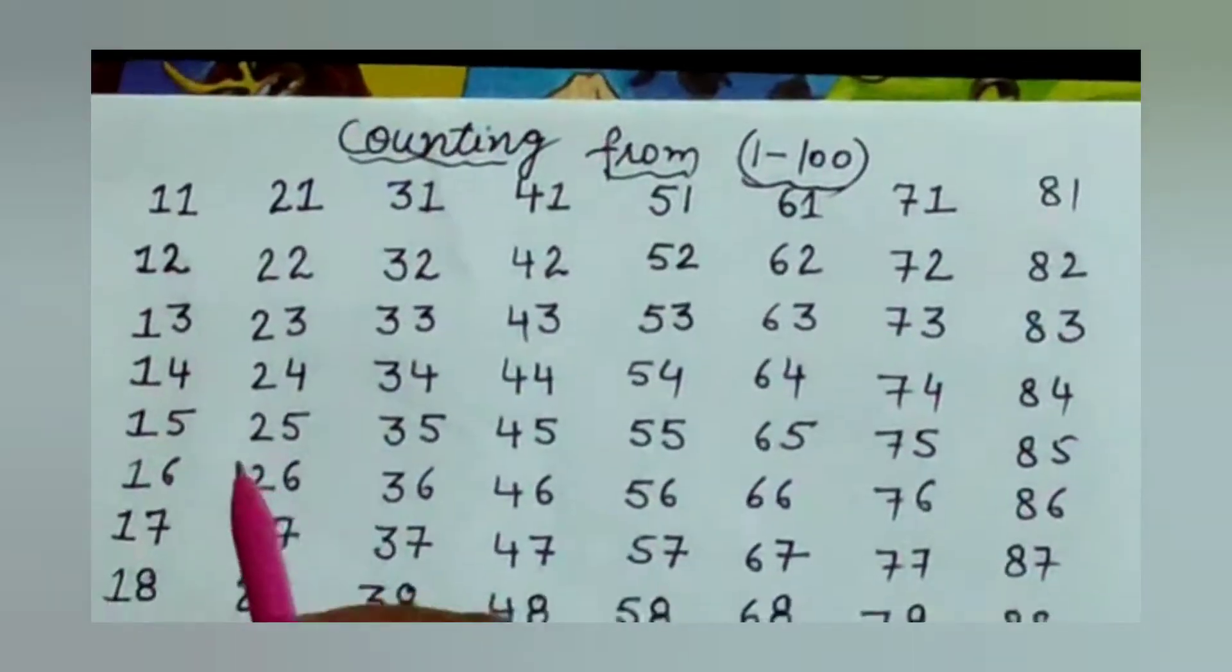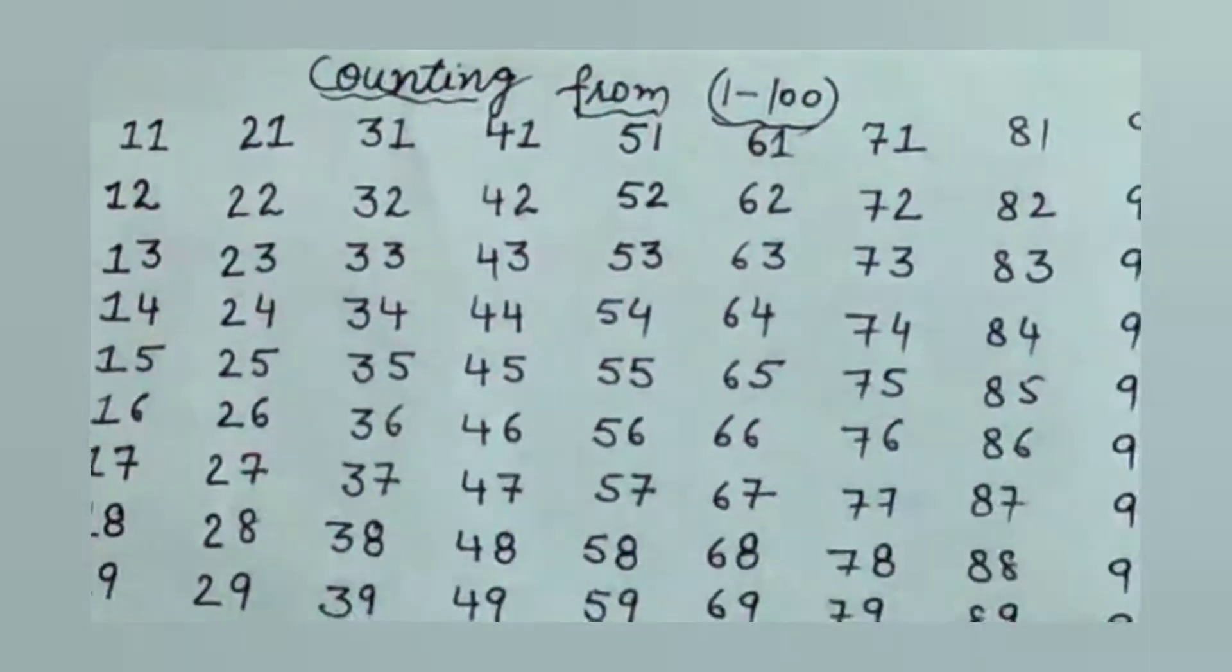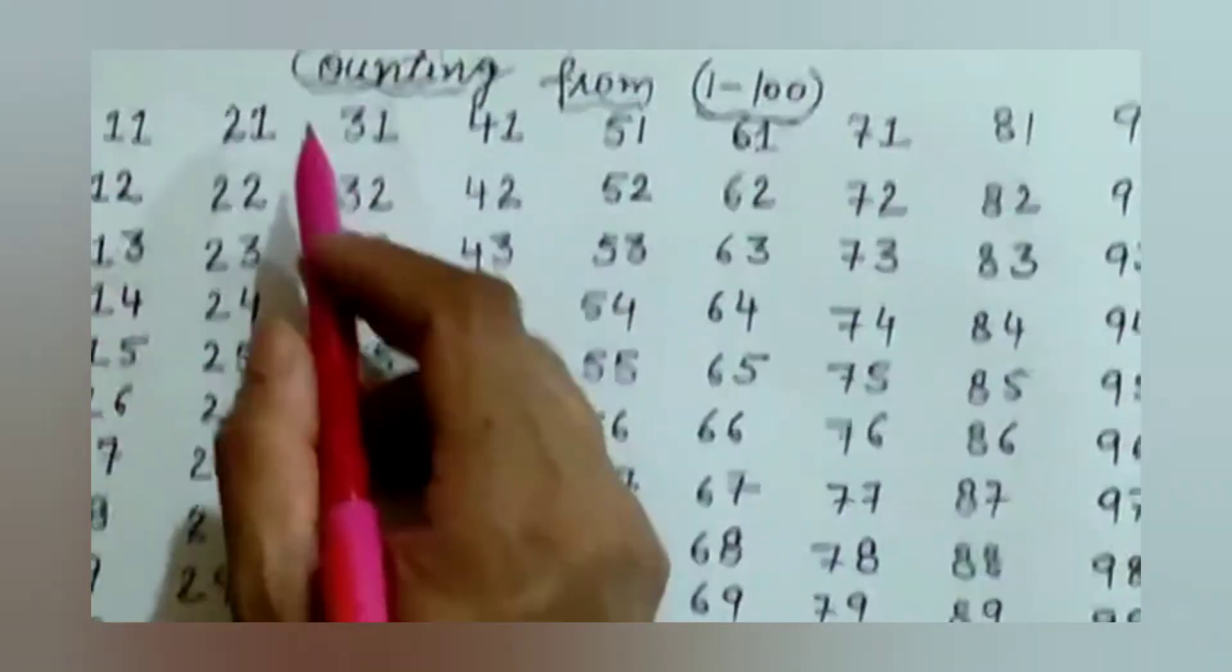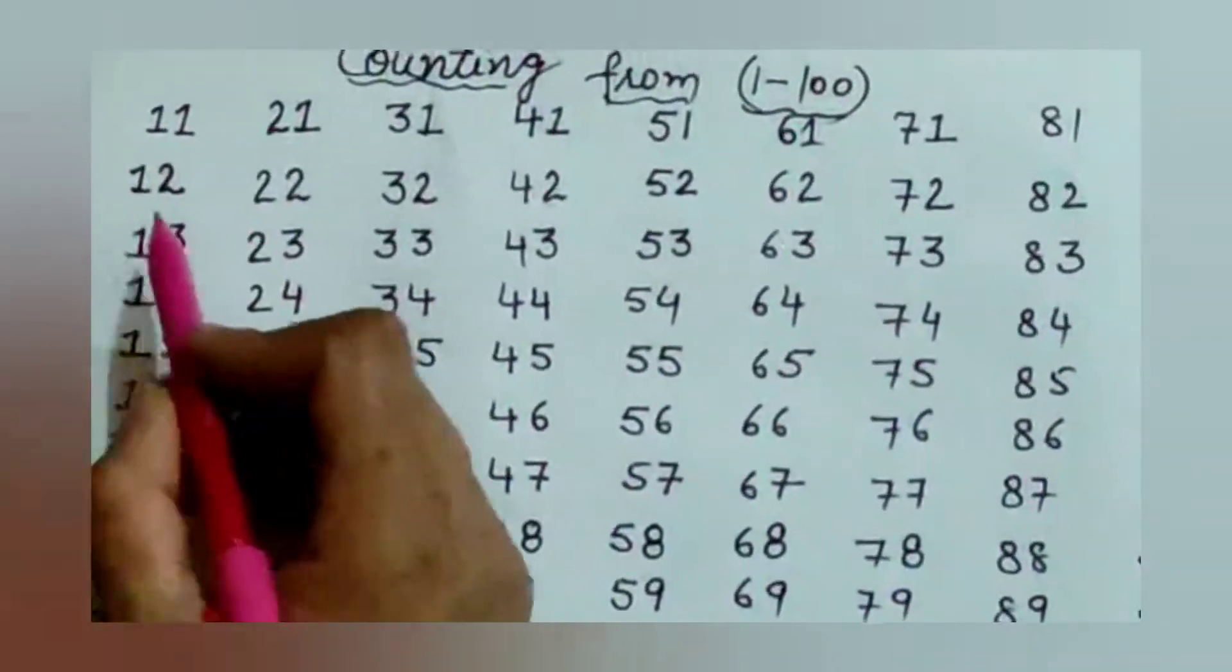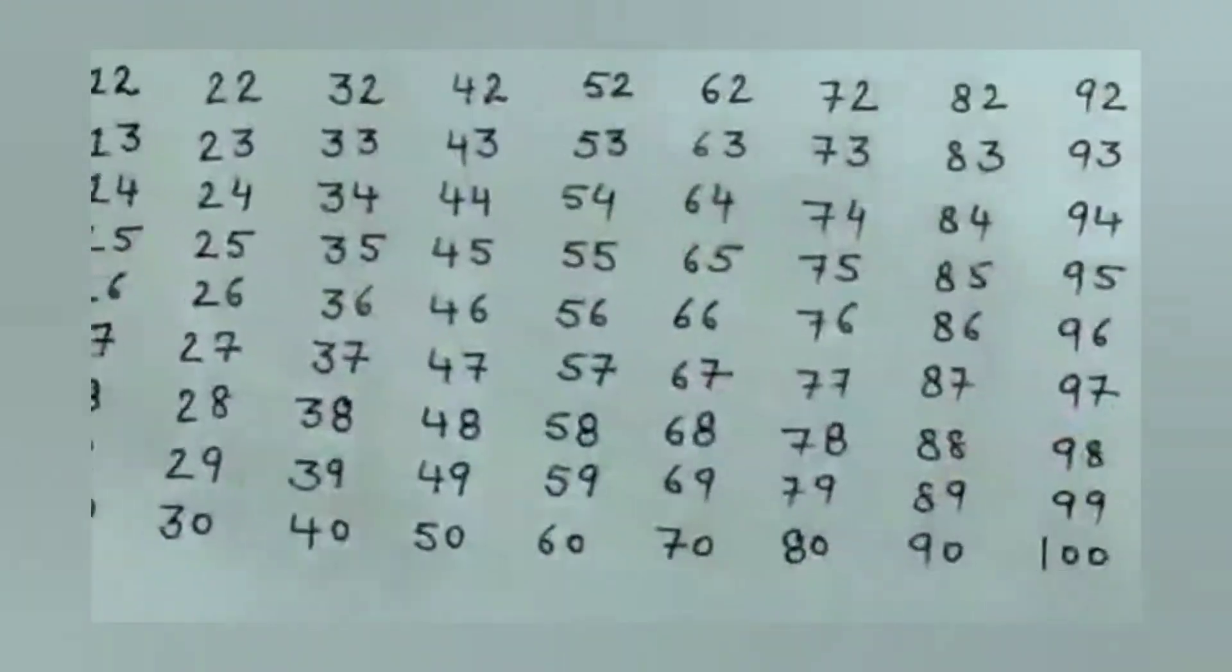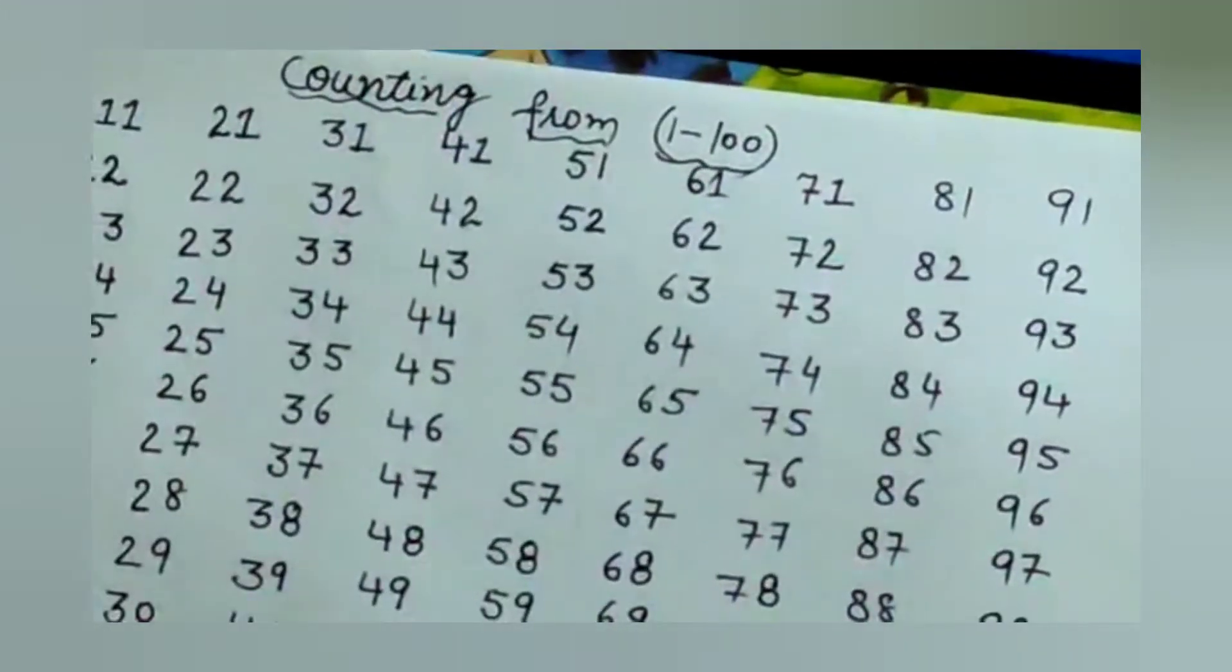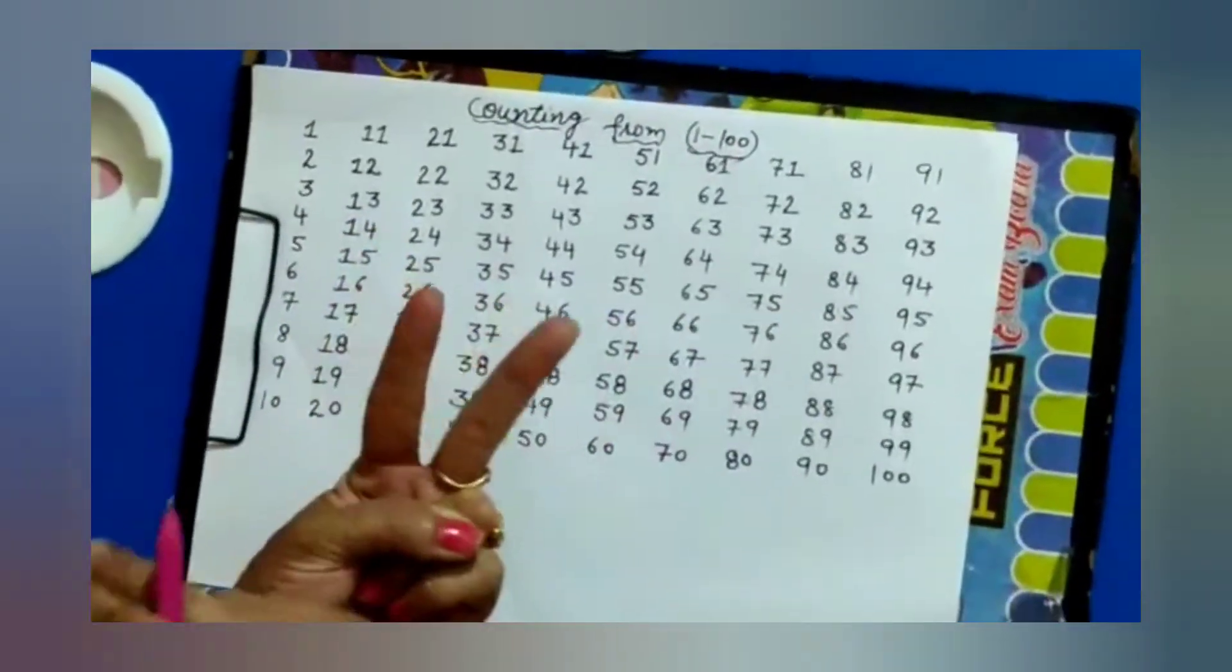So students, today we will learn about skipping of numbers by twos. For this, we will write forward counting from 1 to 100. Now take your two fingers—first finger, second finger—and count.